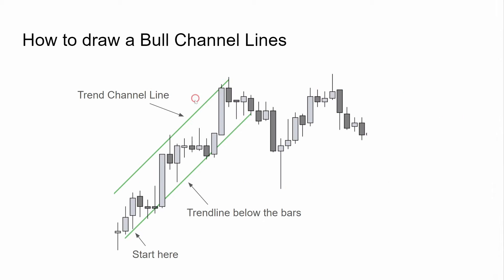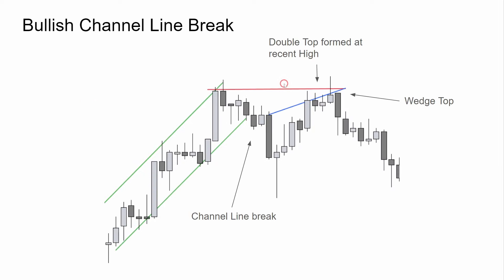How to draw bull channel lines: we start at the bottom left and extend to the top right. This is the trend line for the bulls and the opposite line containing the price is the trend channel line. Bullish channel line break: here we can see the same channel with a very strong break, then a retest of the highs. Here is that wedge top, which led to two legs down for the bears.